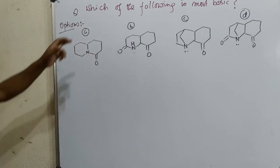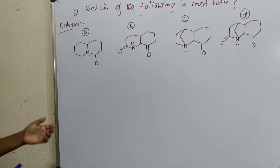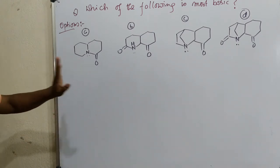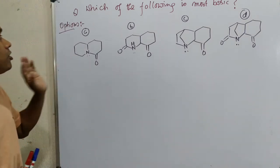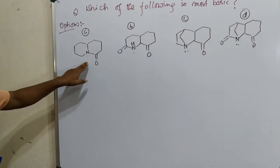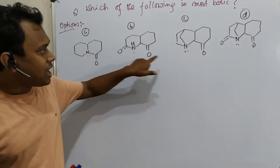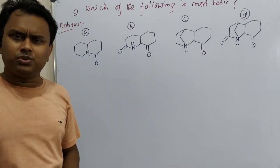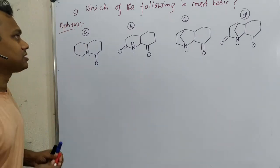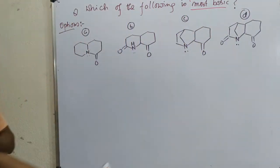Now you can see the question is which of the following is most basic. Options are given in front of you. Just look at what are the compounds presented. These two are simple amine, this is a tertiary amine, this is a secondary amine. And these two are also tertiary amine but there is something in it. The question asked is most basic. Just trying to understand what is asked.